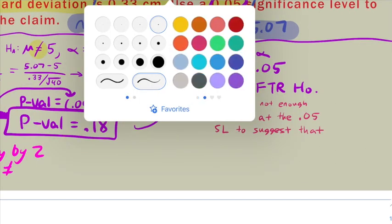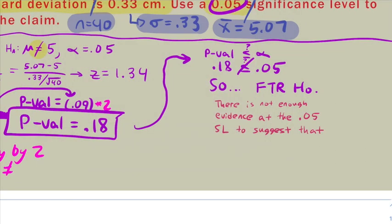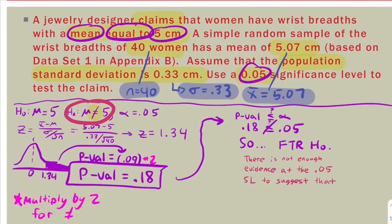I'm going to steal most of our script from that last problem because it's going to be the same script. We just need to reword that alternative hypothesis. We remember that the alternative hypothesis said that the average wrist breadth was not equal to 5. So I write exactly what the alternative is saying, and this problem's done.